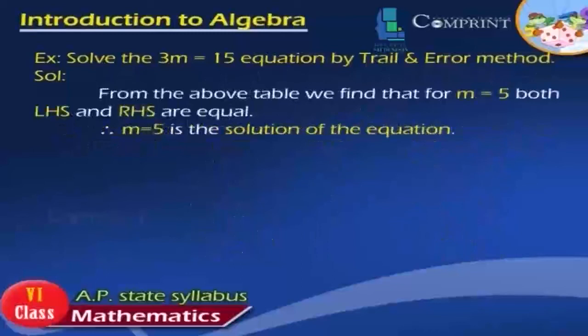From the above table, we find that for m = 5, both LHS and RHS are equal. Therefore, m = 5 is the solution of the equation.